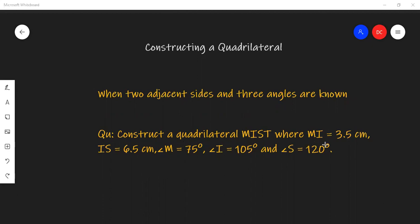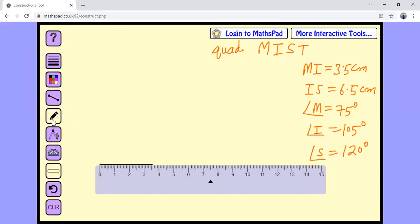We have to construct a quadrilateral MIST when MI, IS (two sides) and three angles are given. Let's draw a rough figure first. So the rough figure will look like MIST.